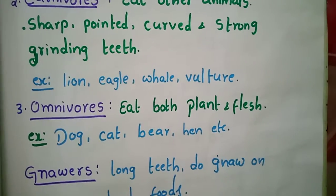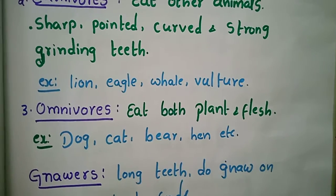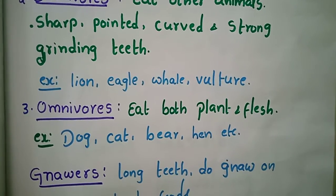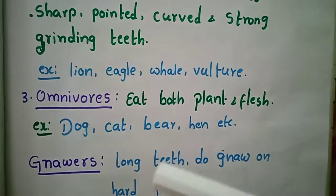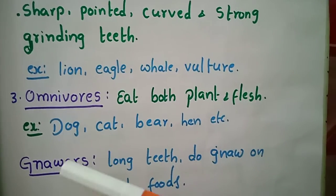Humans are classified as omnivores. Non-vegetarians also fall under the omnivore category.